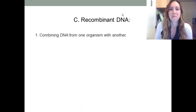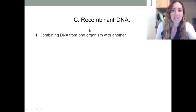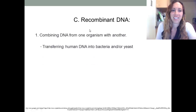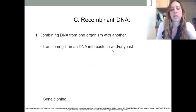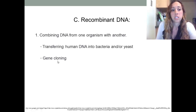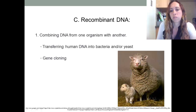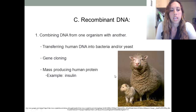Recombinant DNA involves combining DNA from one organism with another. Examples include transferring human DNA into bacteria or yeast, gene cloning such as Dolly — the first genetically cloned animal — and mass producing human proteins such as insulin.